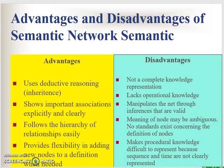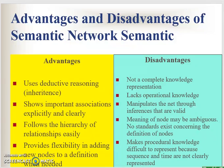These are the advantages and disadvantages of semantic network. Advantages: we can use deductive reasoning or inheritance, show important associations between objects clearly, follow the hierarchy of relationships easily, and it provides flexibility in adding new nodes when needed. However, disadvantages: it's not a complete knowledge representation and lacks operational knowledge. We also cannot represent procedures or the importance of steps in semantic networks.